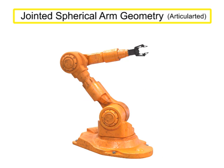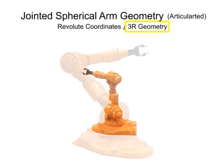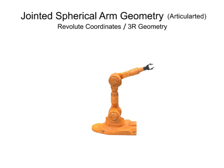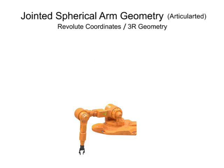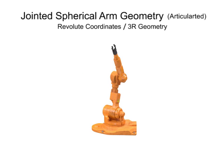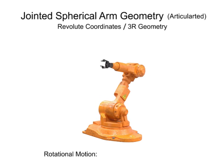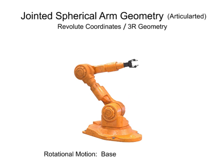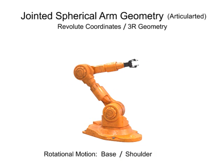Jointed spherical arm geometry robots have rotation in three directions, use revolute coordinates, and are given the designation of 3R. They are one of the most popular types of robotic arms and most accurately mimic the movement of the human arm. Robotic arms with jointed spherical or articulated geometry rotate on at least three axes. Left and right movements are provided by rotation at the base, horizontal movement by rotation at the shoulder, and vertical movement by rotation at the elbow.